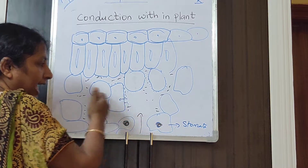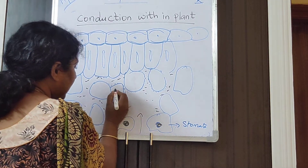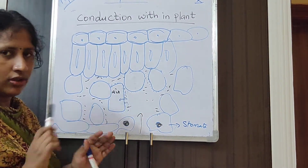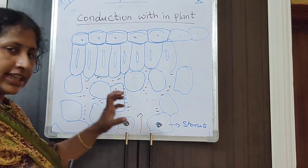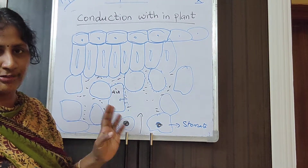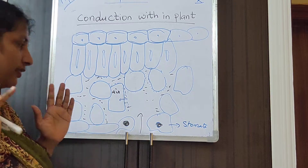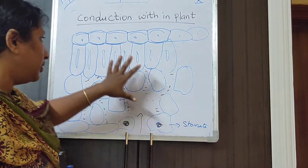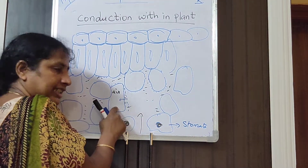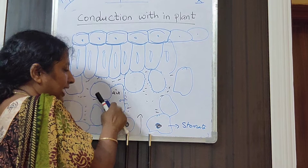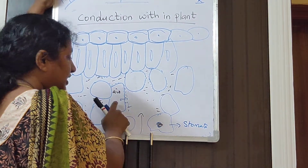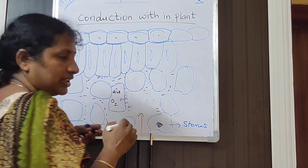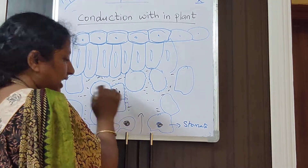Oxygen has entered into the cell, and the plant carries out respiration. So oxygen has entered and the cell is now rich in oxygen.